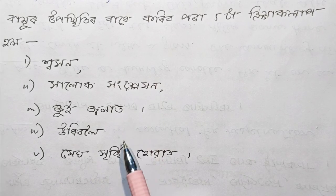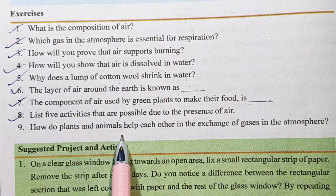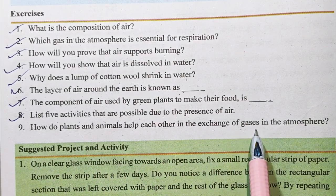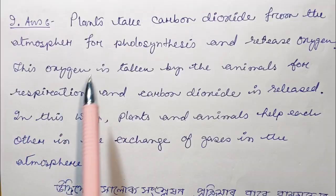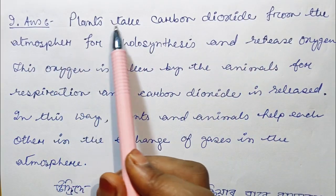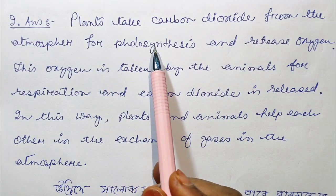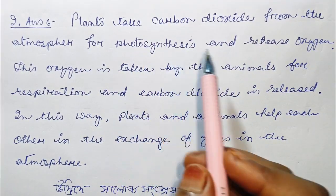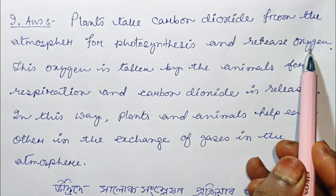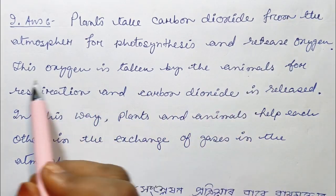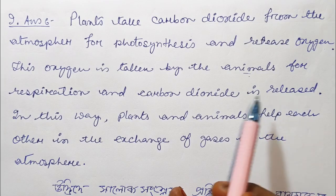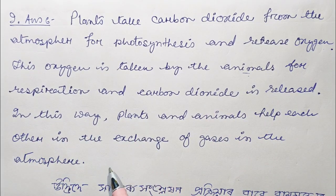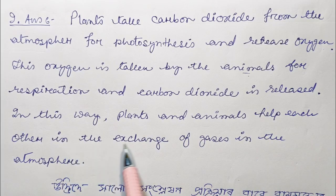How do plants and animals help each other in the exchange of gases in the atmosphere? Plants take in carbon dioxide from the atmosphere for photosynthesis and release oxygen. This oxygen is taken by animals for respiration, and carbon dioxide is released. In this way, plants and animals help each other in the exchange of gases in the atmosphere.